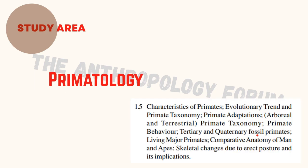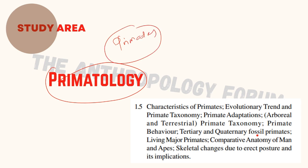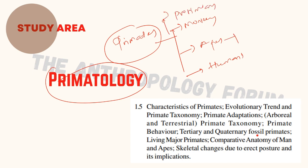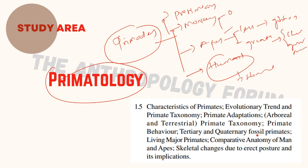Another area that interests biological anthropologists is primatology — the study of primates. Primates include monkeys, apes, humans, and prosimians. Apes are divided into lesser apes (gibbons) and greater apes (chimpanzees, gorillas, bonobos). Humans — Homo sapiens. Monkeys are classified into old world and new world monkeys; prosimians include tarsiers and lemurs. Under syllabus 1.5, we will study the characteristics of these primates, their evolution, adaptations, taxonomy, behavior, and the major living primates.